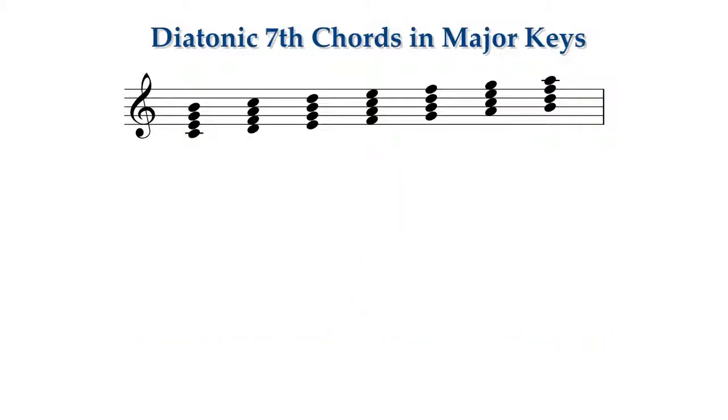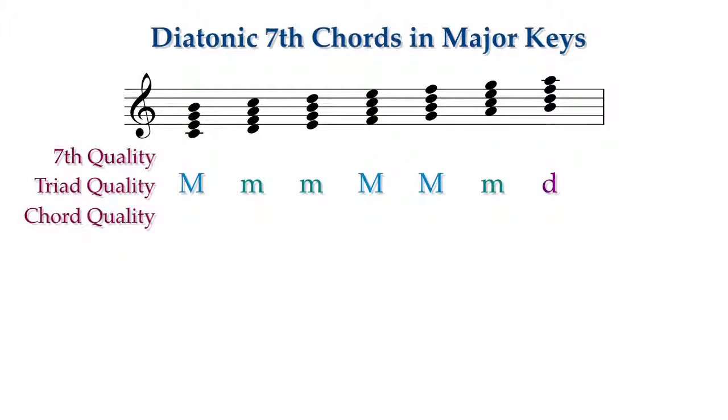Let's take a look at the qualities of the seventh chord, starting with the diatonic chords in a major key. We already know the qualities of the triads. We must now consider the quality of the seventh as it combines with the triads.